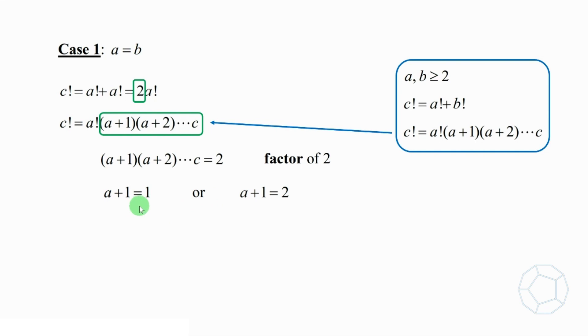In particular, for a+1, it is either equal to 1 or 2. That is, a is 0 or 1. However, both of them are rejected, as a and b are both larger than or equal to 2.